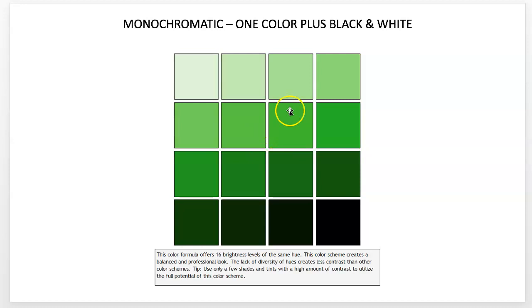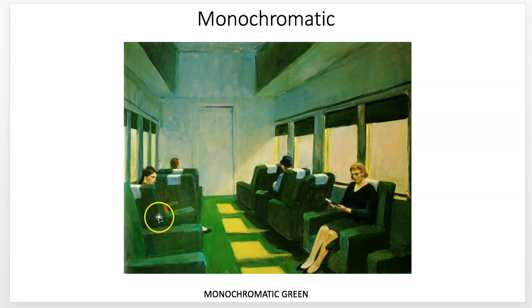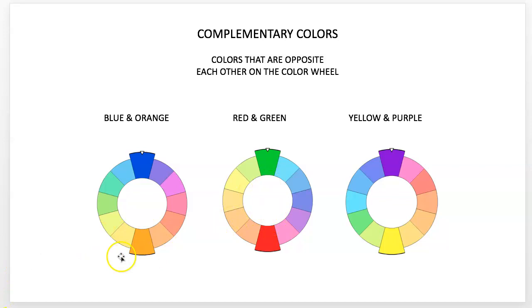Monochromatic is one color plus its tints and shades — one color plus black and white. This painting is a near-monochromatic example, breaking slightly with a little bit of red. That red pops out a lot as a focal point because red is opposite green on the color wheel. These are called complementary colors — they're opposite on the wheel and make each other stand out. Blue and orange, red and green, yellow and purple are the complementary pairs.